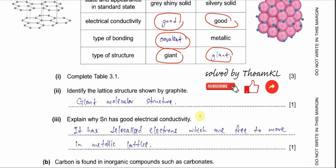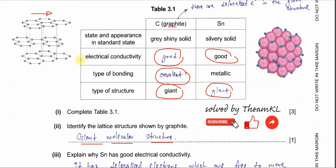Part two: identify the lattice structure shown by graphite. For graphite, this lattice structure is a giant molecular structure. The layers form a network — a giant covalent network — so the structure is called a giant molecular structure.